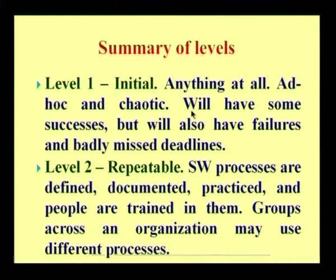This capability maturity model talks more about process improvement. As an initial stage towards improvement, Level 1 is called the Initial level — ad hoc and chaotic, with some successes and failures to be addressed and badly missed deadlines. Whenever software needs to be addressed, three things must be remembered: time, cost, and quality. We should not run out of time, we should manage cost effectively, and maintain quality. All three can be achieved when a process is carried out effectively.